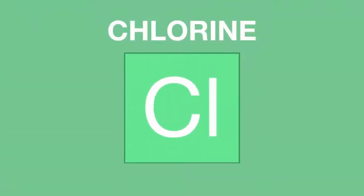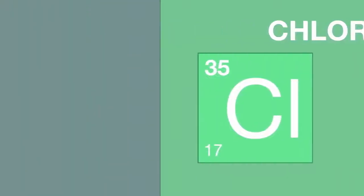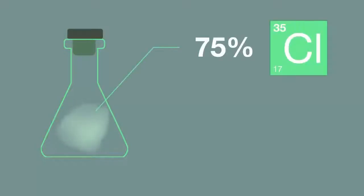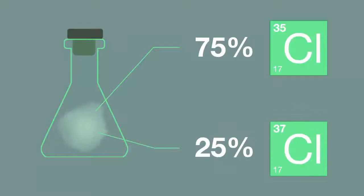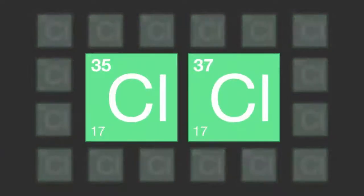The two most common types of chlorine atom in the world around us are chlorine-35 and chlorine-37. If we took a sample of chlorine gas, we would find that it was made up of approximately 75% chlorine-35 and 25% chlorine-37. There are other isotopes of chlorine, but these two are the most common.